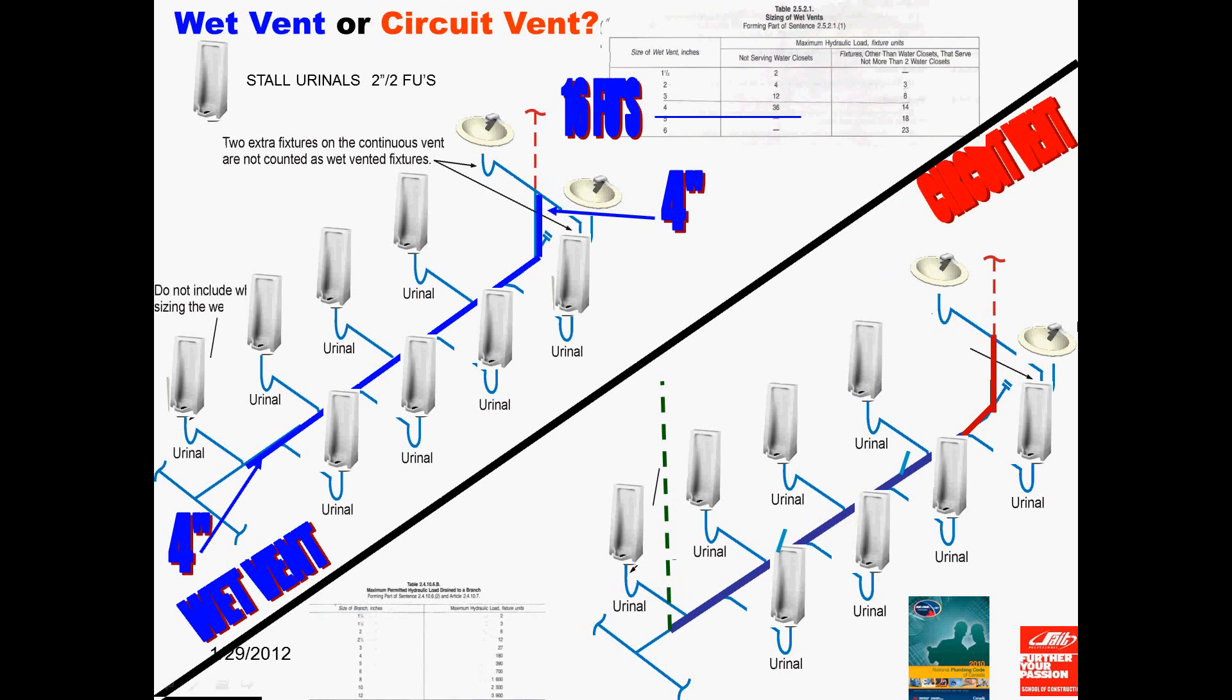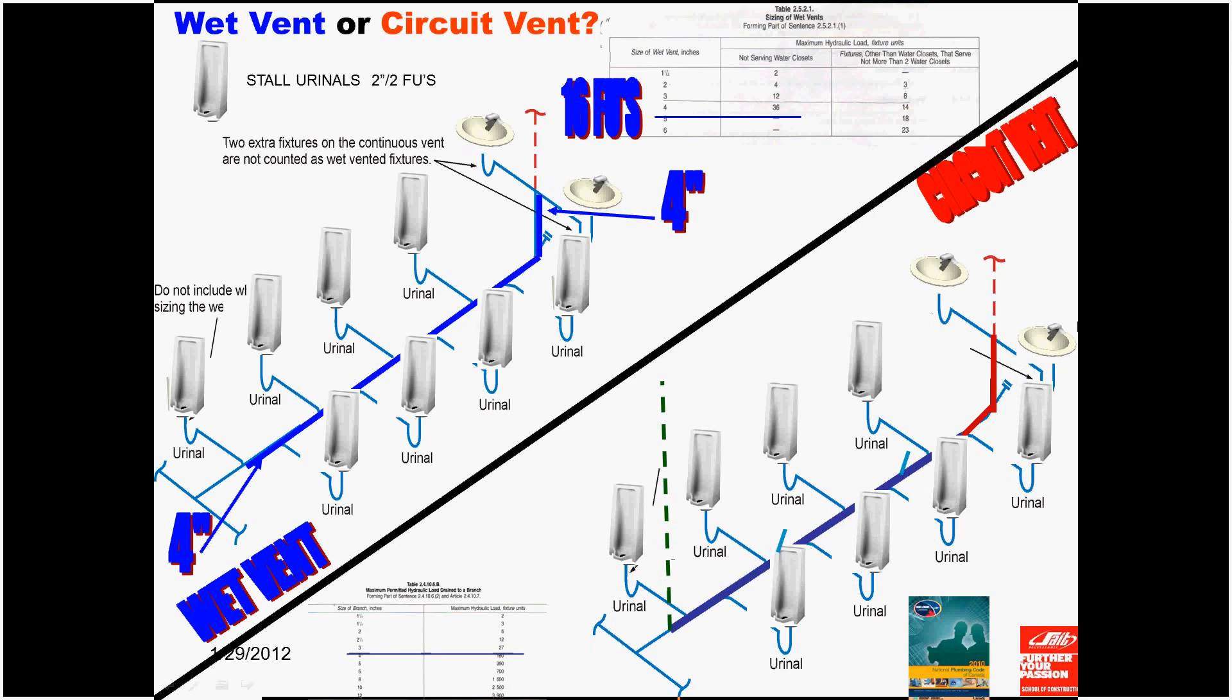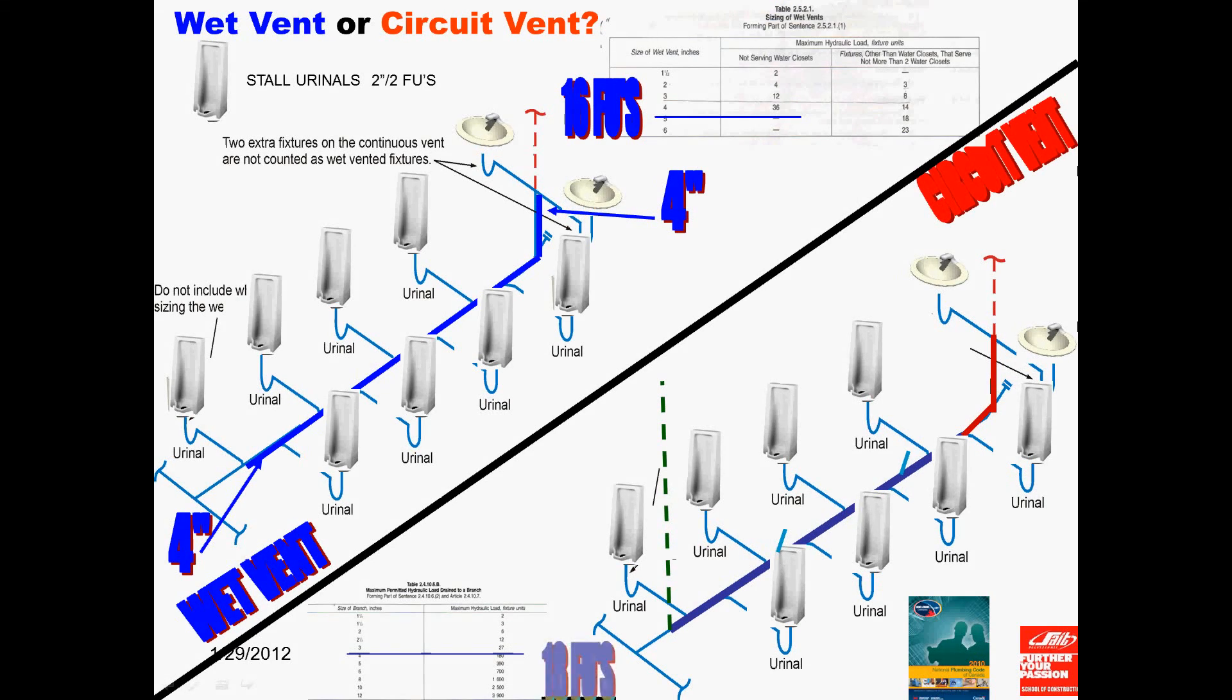So, now we want to figure out the sizes for the circuit vented branch. In order to figure out the circuit vented branch, we need to turn to the branch table 24106B in your code books, which should also be labeled as the circuit vented branch table as well as the branch table. How many fixture units are dumping into the dark blue pipe or the circuit vented branch? Well, every fixture unit this time is dumping into it for a total of 18 fixture units.